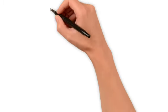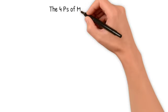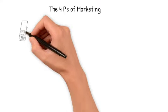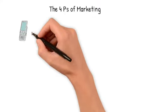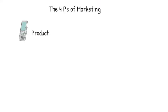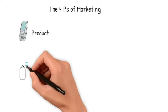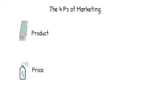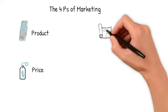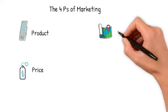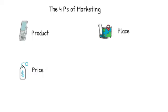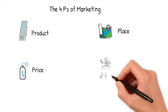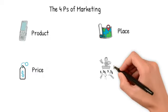Now let's understand what are the 4 elements of marketing. The first one is product, then comes price, the third one is place, and the fourth is promotion.